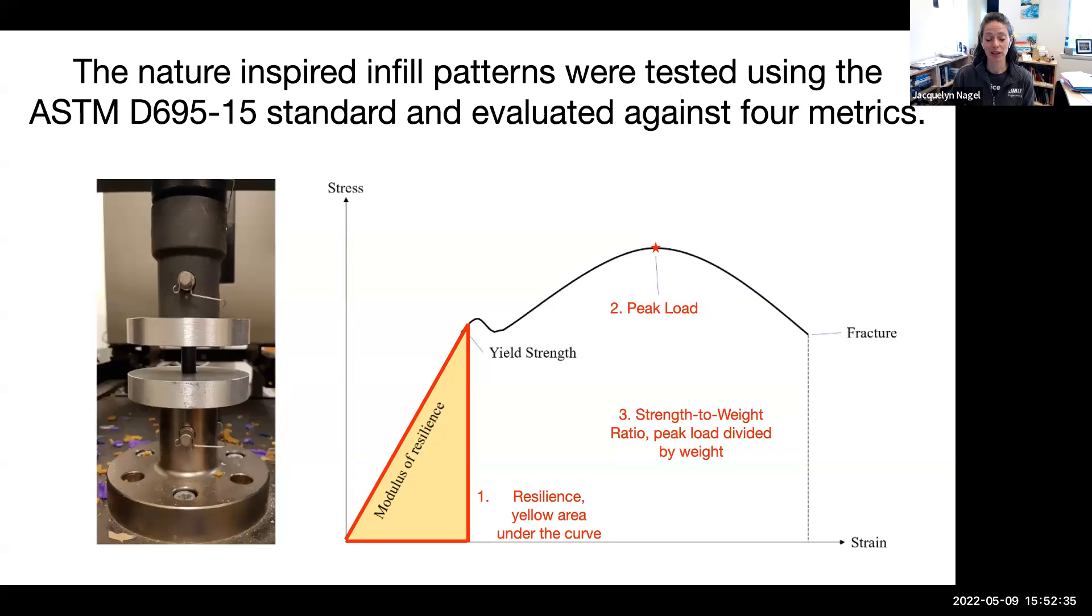The strength-to-weight ratio, which is the peak load value divided by the weight of the part. And finally, the extension, which is the measurement of how much the material permanently deforms before reaching peak load or failure.